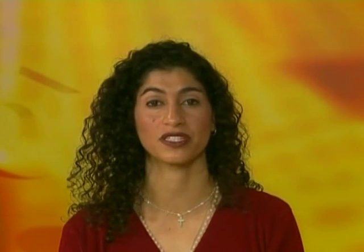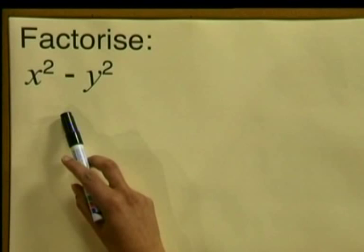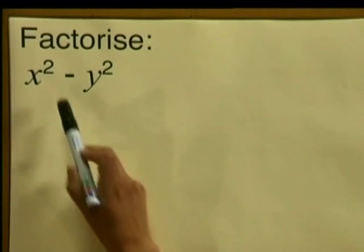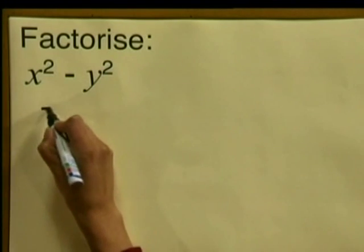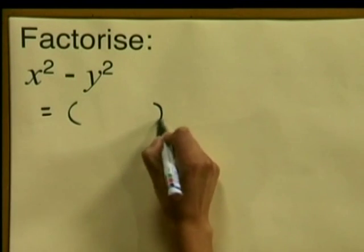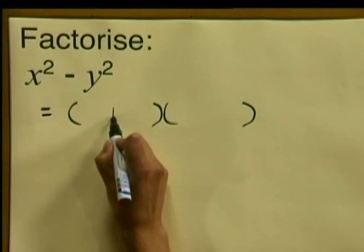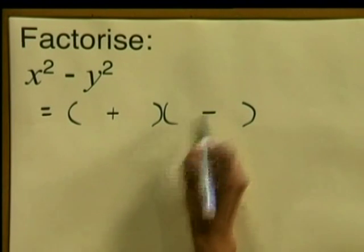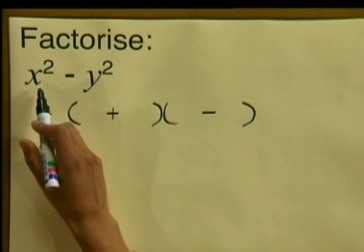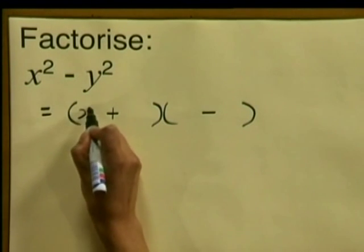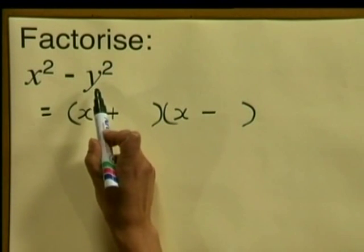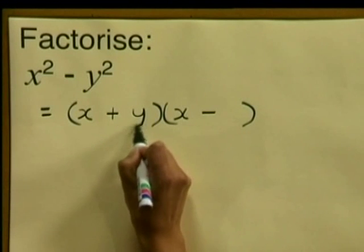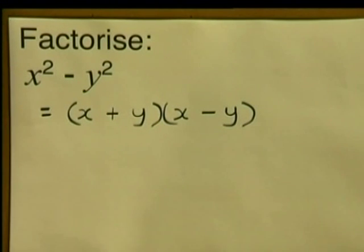Now let's try and factorize a few more of these expressions. Here is the first one: x squared minus y squared. It is the difference of two squares, so let's factorize. We put down our two brackets and inside the brackets we're going to have one with a plus sign and one with a minus sign. We find the square root of x squared, which is x, and that goes in the first place in each bracket. Then we find the square root of y squared, which is y, and that goes in the second place in each bracket. And we have now factorized.